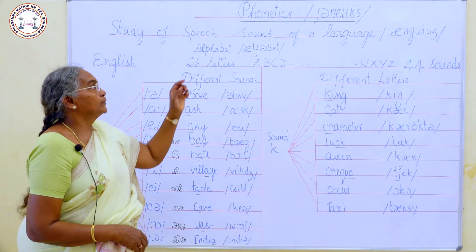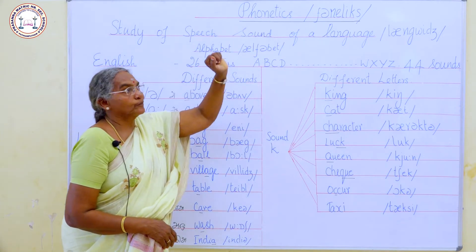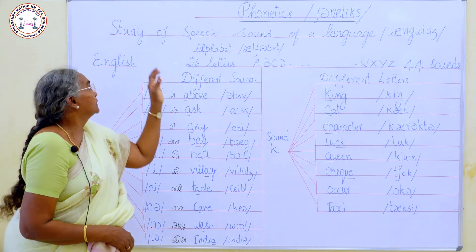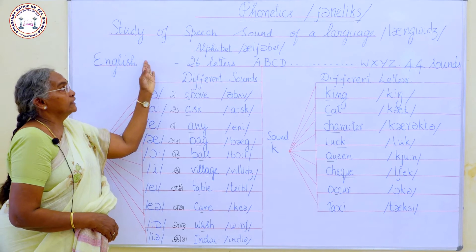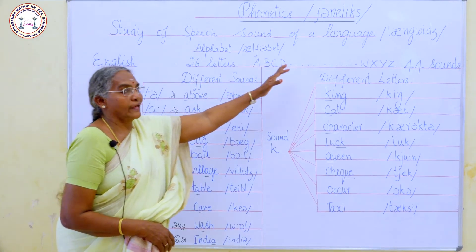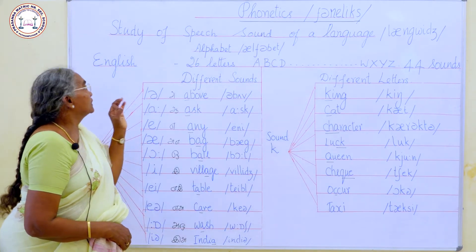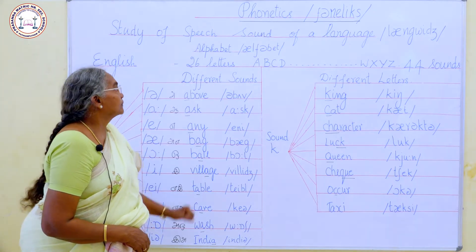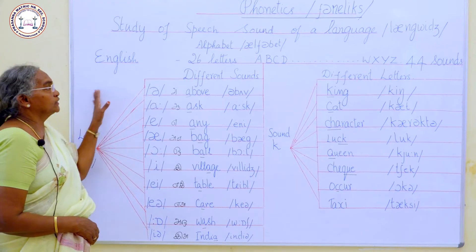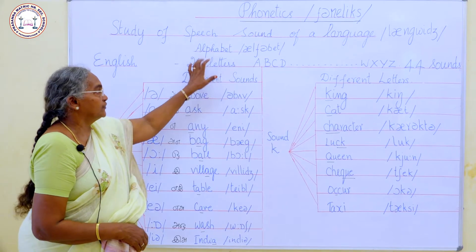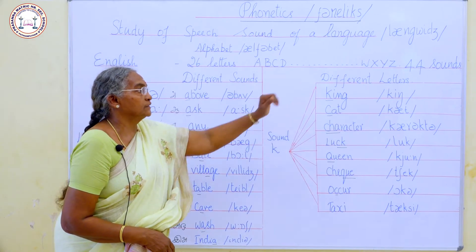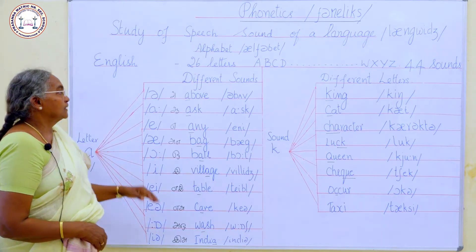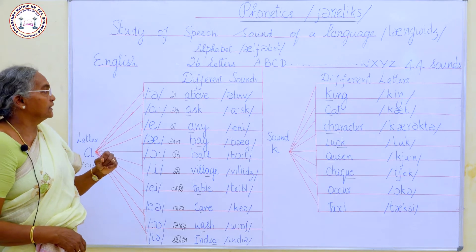Now we are going to learn about Phonetics. Phonetics is the science and study of speech sounds of a language. In English, there are 26 letters in the alphabet from A to Z, but it has 44 sounds.